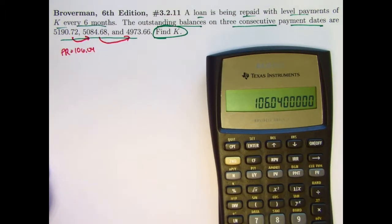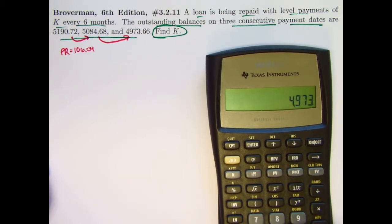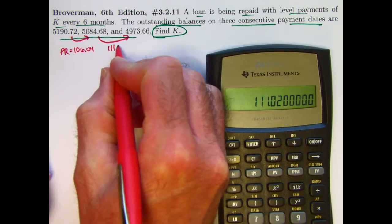Take 5084.68 and subtract 4973.66, and we get a principal reduction of 111.02.